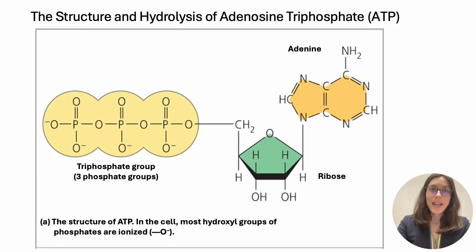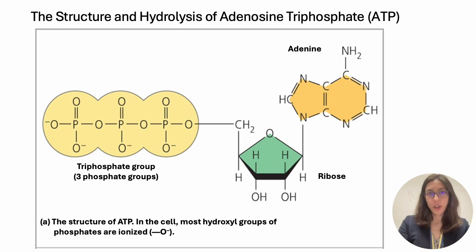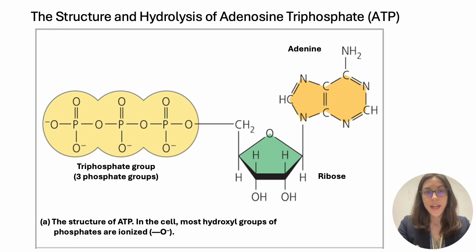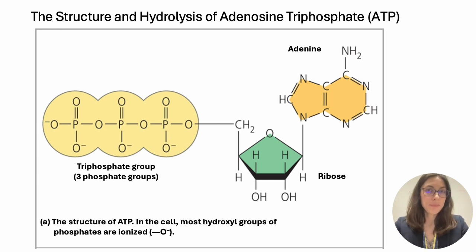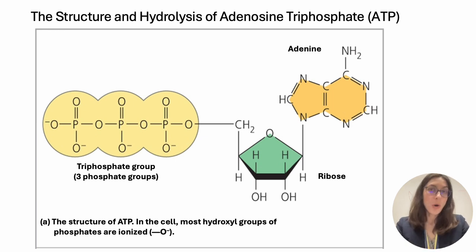Hi all. So ATP, the molecule adenosine triphosphate, is the energy currency of the cell. What that means is that this molecule, this structure that you see here, is a molecule that works as a small battery or power source for all endergonic reactions in the cell. So if something will not happen unless it is fueled by energy from the cell, most of the time that energy is coming in the form of ATP.